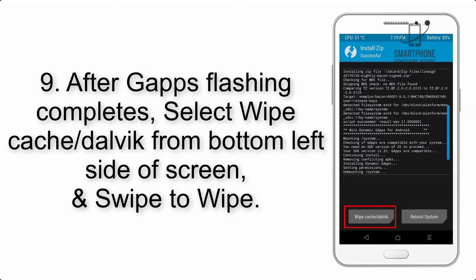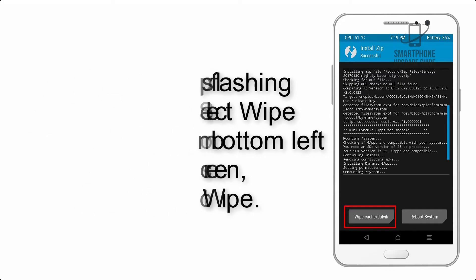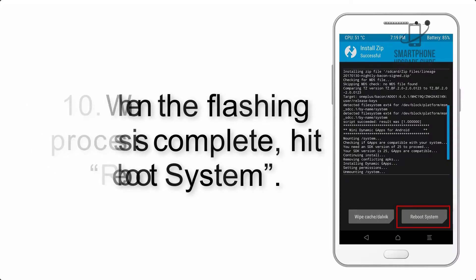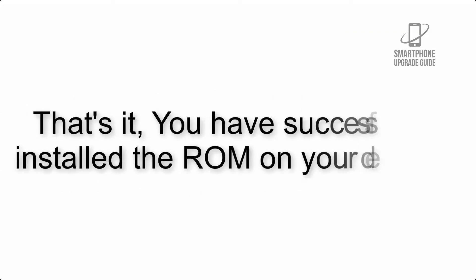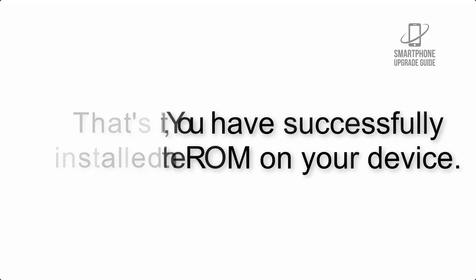Step 8: Flash the GApps zip package in the same manner. Step 9: After GApps flashing completes, select Wipe Cache and Dalvik from the bottom left side of the screen and swipe to wipe. Step 10: When the flashing process is complete, hit Reboot System. That's it — you have successfully installed the ROM on your device.